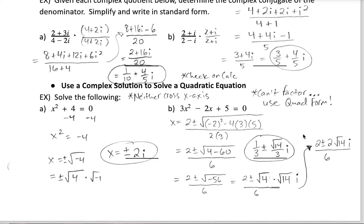Now let's see why we needed to do all that — we're getting to solving quadratics with imaginary solutions. One approach: if the quadratic is missing a b term, move the c term across the equal sign and square root both sides. In this case, we're square rooting a negative four, which is the same as the square root of four with i attached — giving us positive and negative 2i as our imaginary solutions.